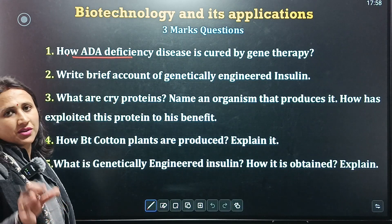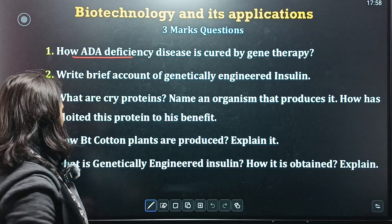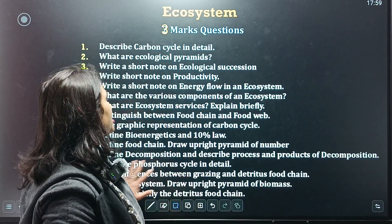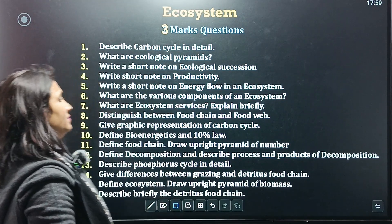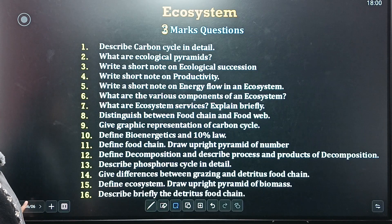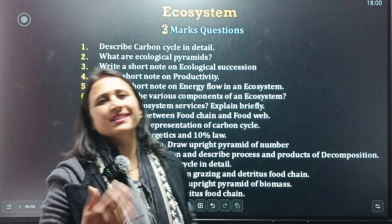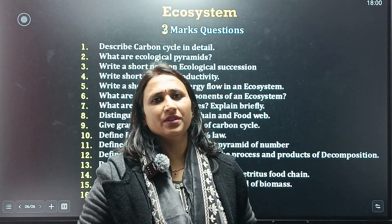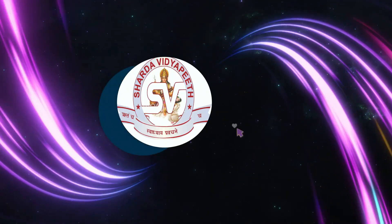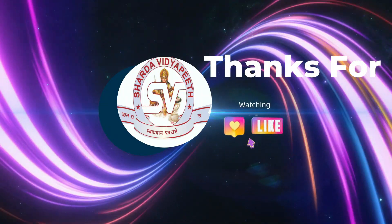Questions appear in two marks in Section B and also in Section C. Next slide — ecosystem chapter, three-mark questions, very crucial questions. That's all for now — we'll meet in the next video with Section D.